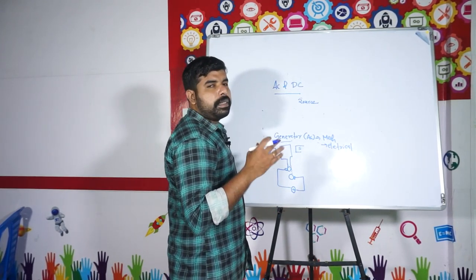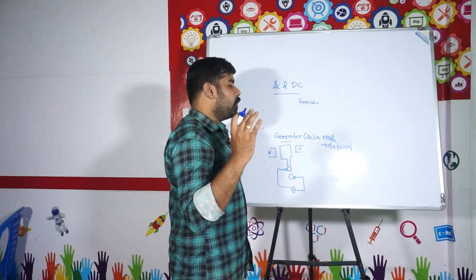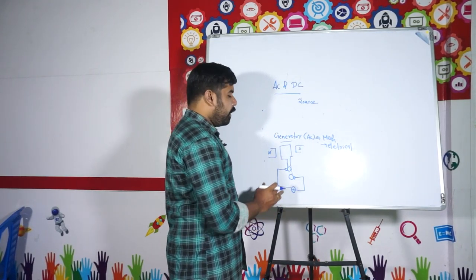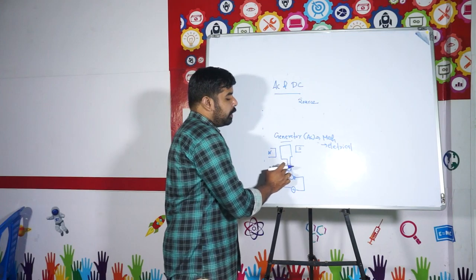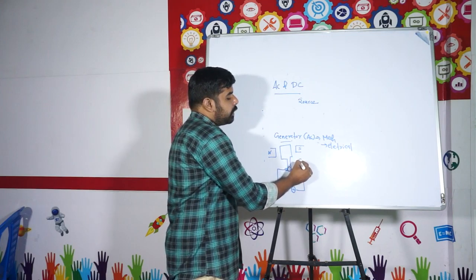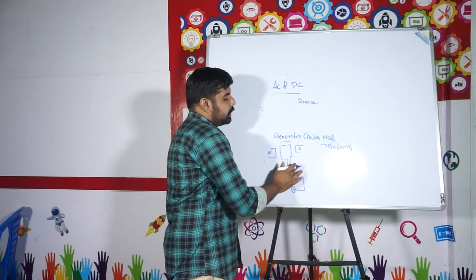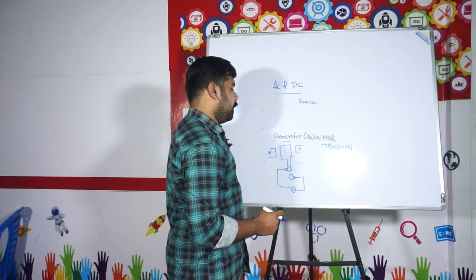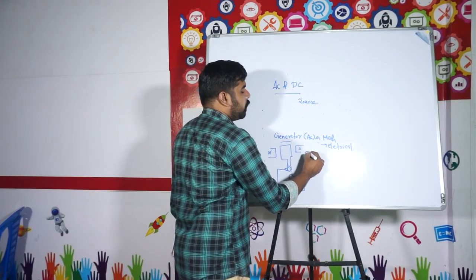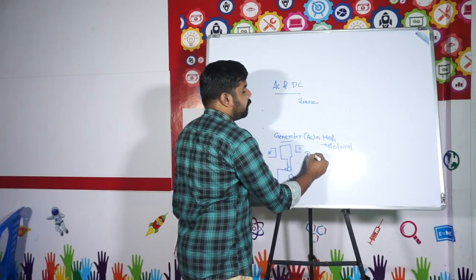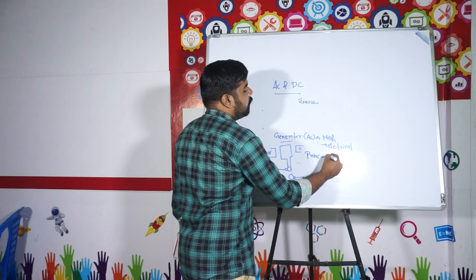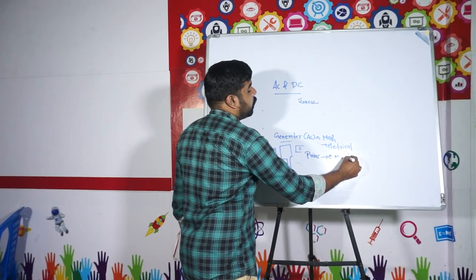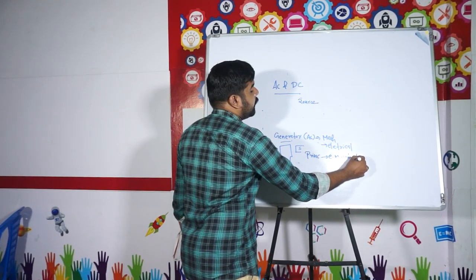There are differences between the motor and generator: the motor uses a split ring, while the generator uses slip rings. The working principle of the generator is electromagnetic induction. We have already learned electromagnetic induction.